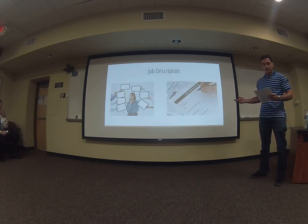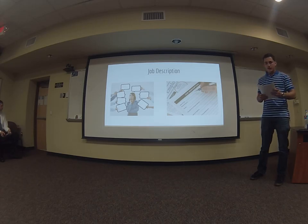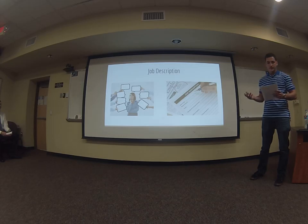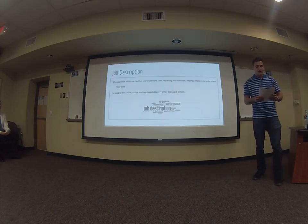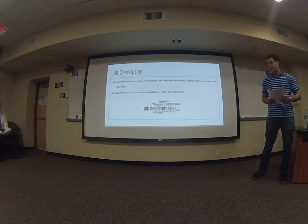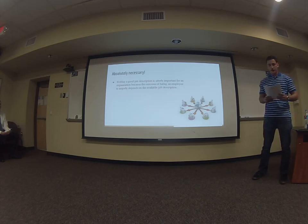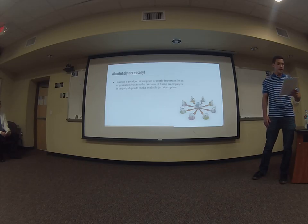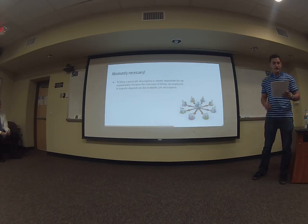So first, job description. Job description is a management tool that clarifies work functions and helps employees understand their jobs. It lists tasks, duties, and responsibilities — TDRs — that a job entails. The main purpose of a job description is to collect job-related data in order to advertise for a particular job. It helps in attracting, targeting, recruiting, and selecting the right candidate for the right job. It clarifies what employees are supposed to do if selected for that particular job opening, and gives recruiting staff a clear view of what kind of candidate is required by a particular department. It also clarifies who will report to whom.